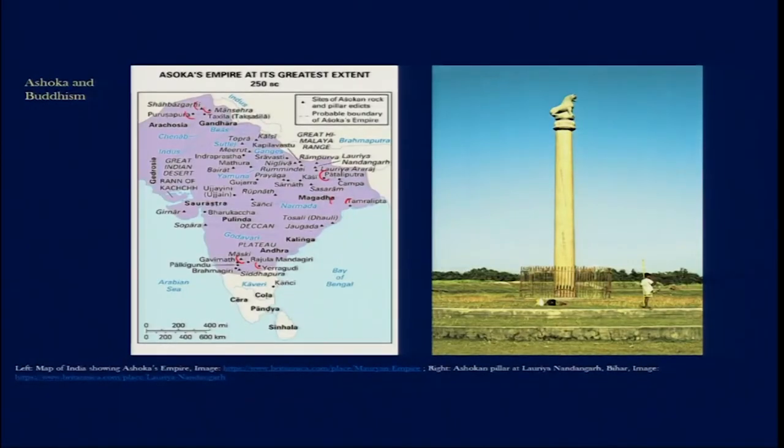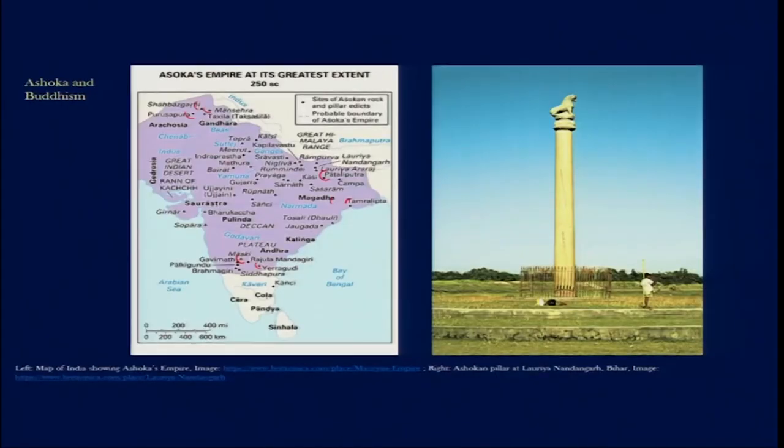We find Ashokan edicts and pillars at many important Buddhist sites, trade sites, and the frontiers of his kingdom. The pillars are carved out of Chunar sandstone — Chunar being in eastern Uttar Pradesh, not far from the city of Pataliputra or Patna — a place historically known for its sandstones. Ashoka commissioned these mighty Ashokan pillars from Chunar sandstone at various sites across his kingdom.